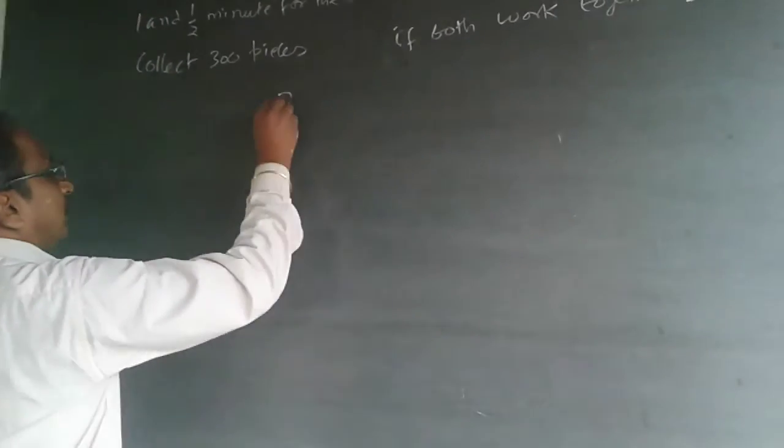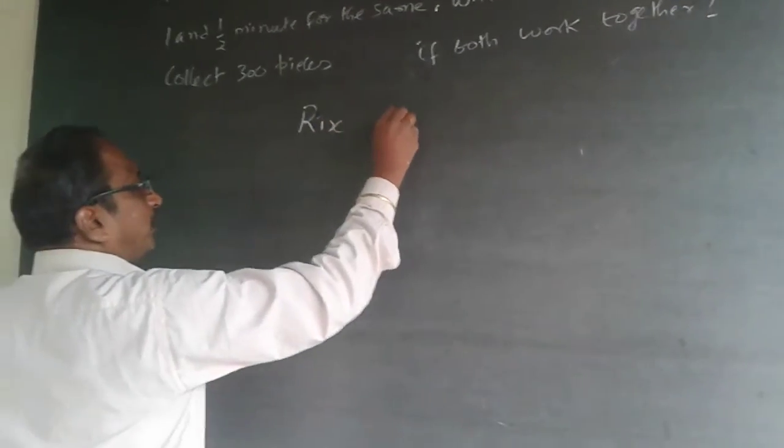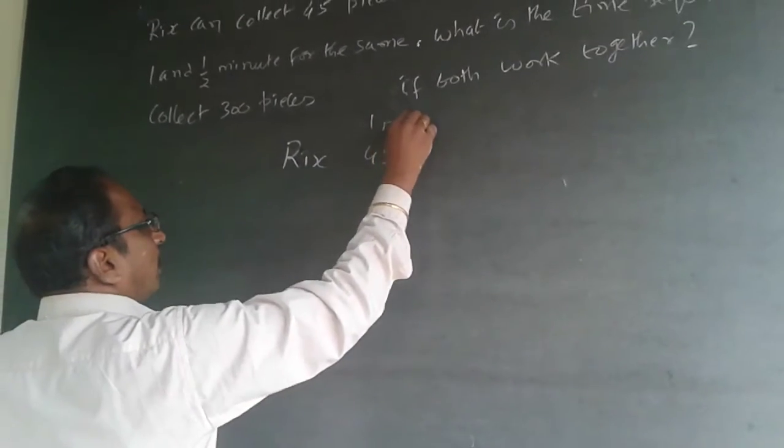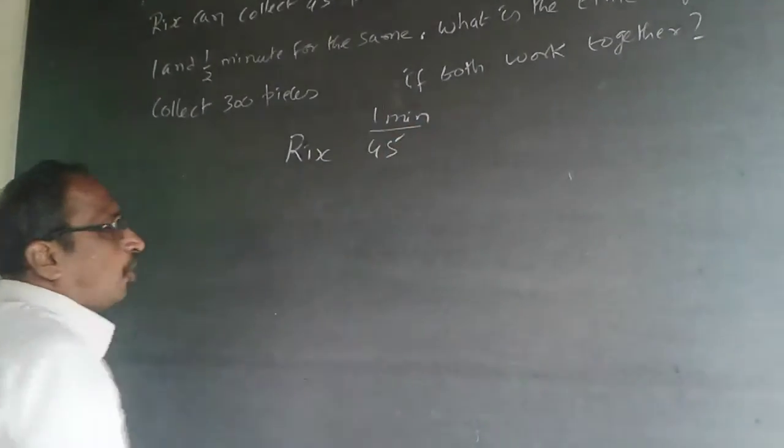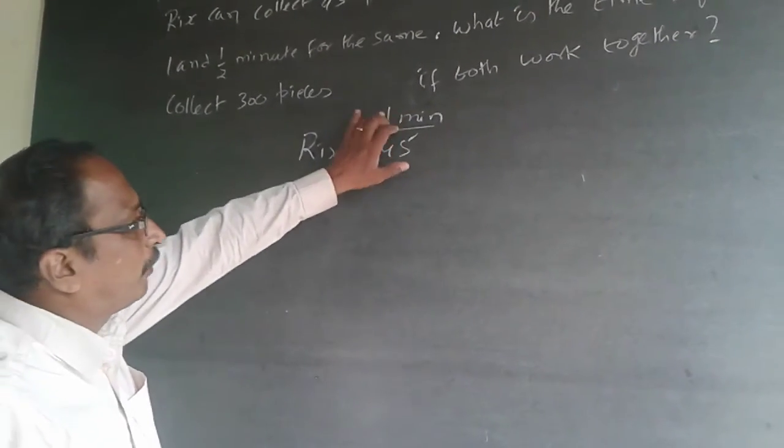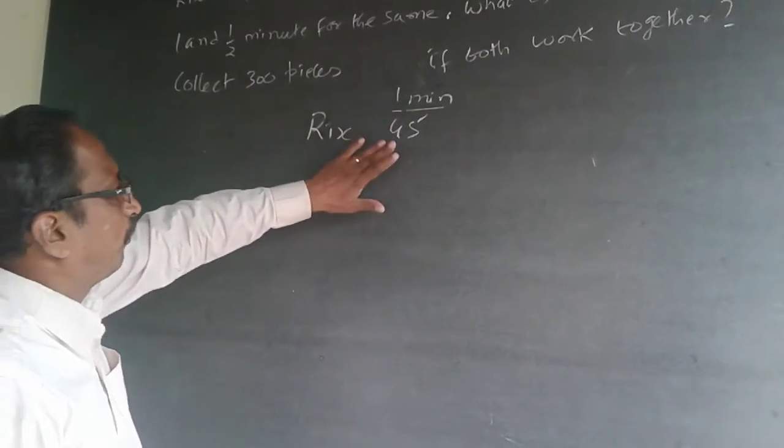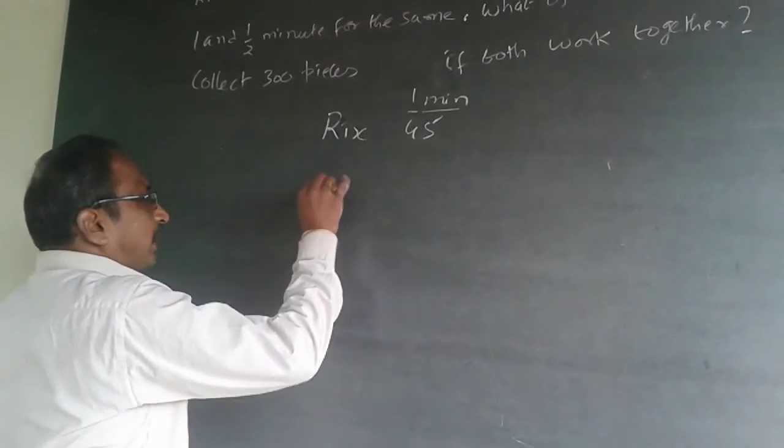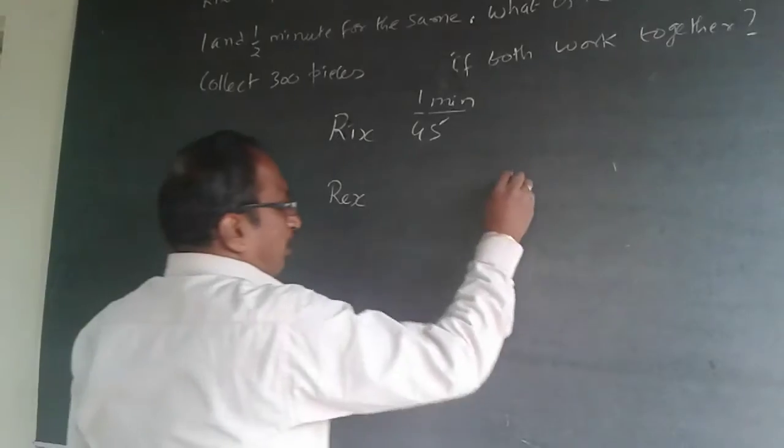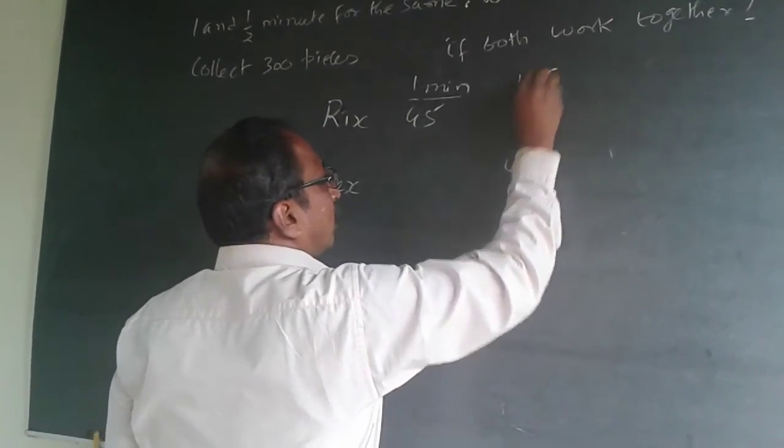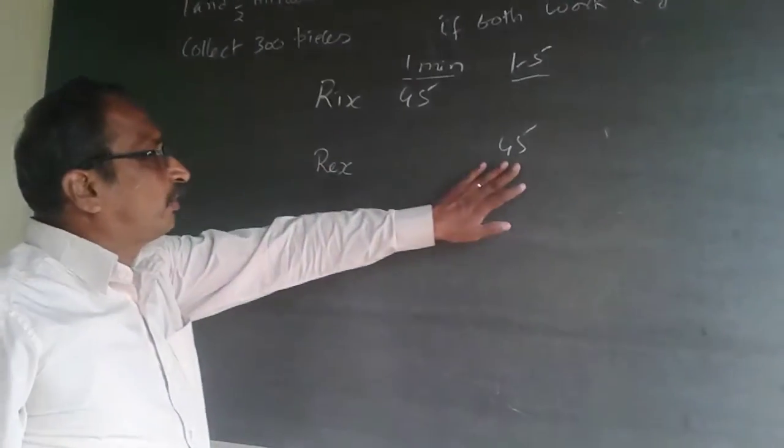So, here what it says is, Rex can collect 48 pieces in one minute. So, the output is 48 pieces in one minute. So, find out what Rex will do in one minute.